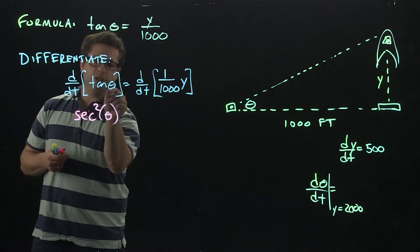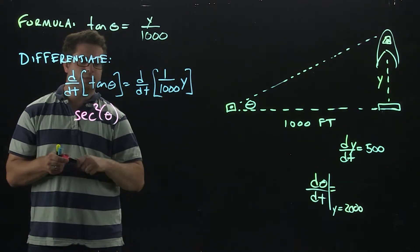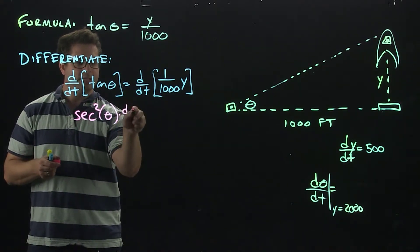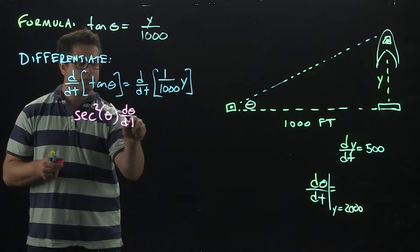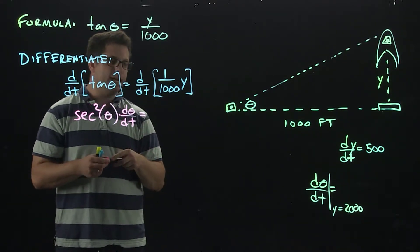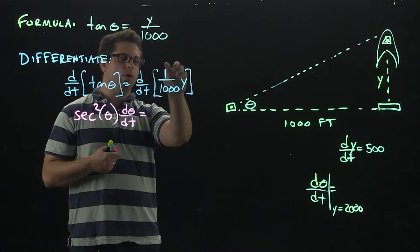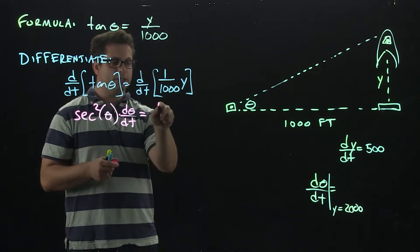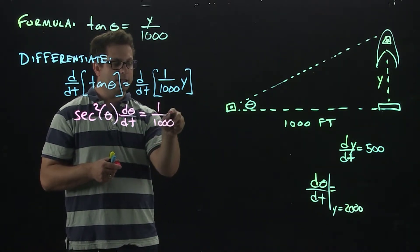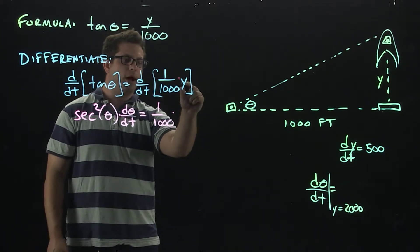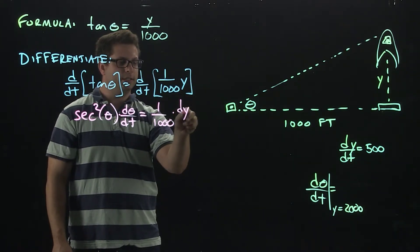Now, we have to differentiate theta because that's what's inside, and that's going to be d theta/dt. On the right-hand side, I have to differentiate 1 over 1,000 y, which is just going to be 1 over 1,000 times, well, the derivative of y is just going to be dy/dt.